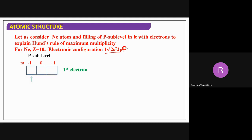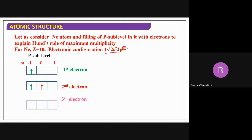The first electron enters at m = -1, the second electron enters at m = 0, and the third electron enters at m = +1. Now all three orbitals are occupied with one electron each. There is no orbital without any electron — each orbital is at least filled with one electron, meaning the subshell is half-filled.